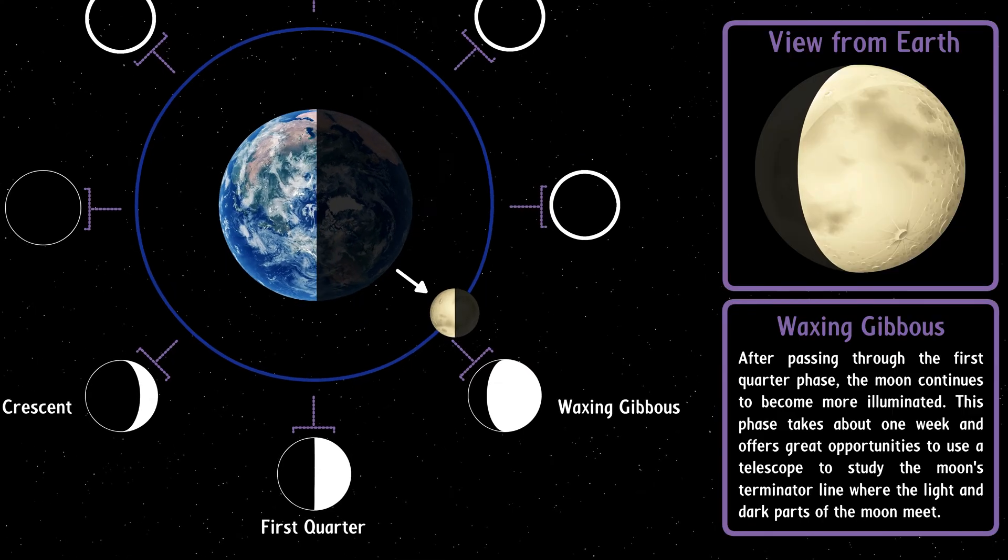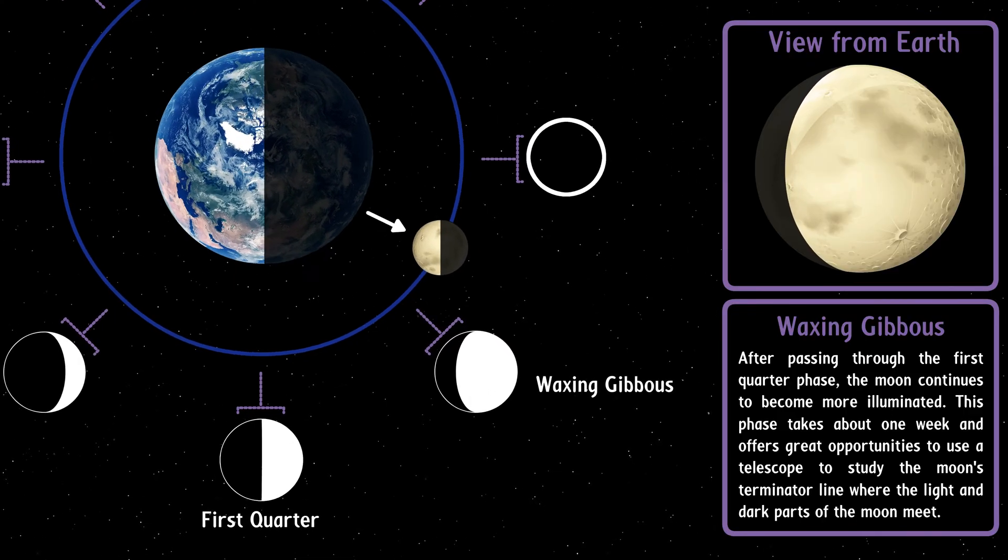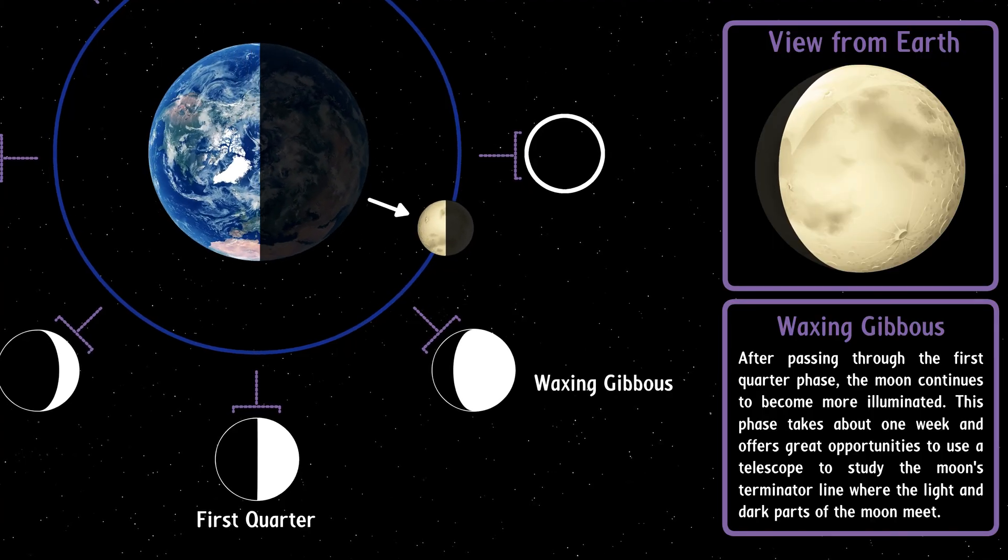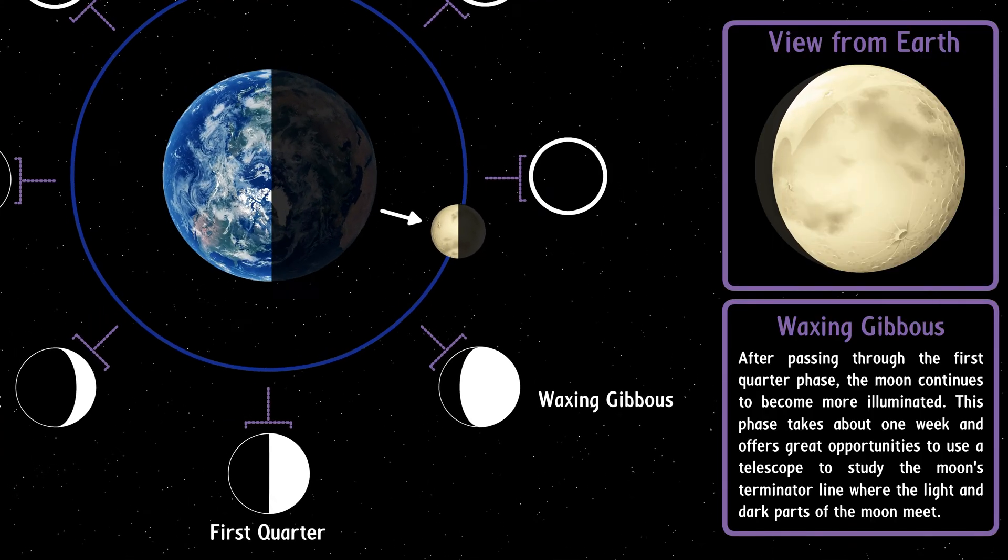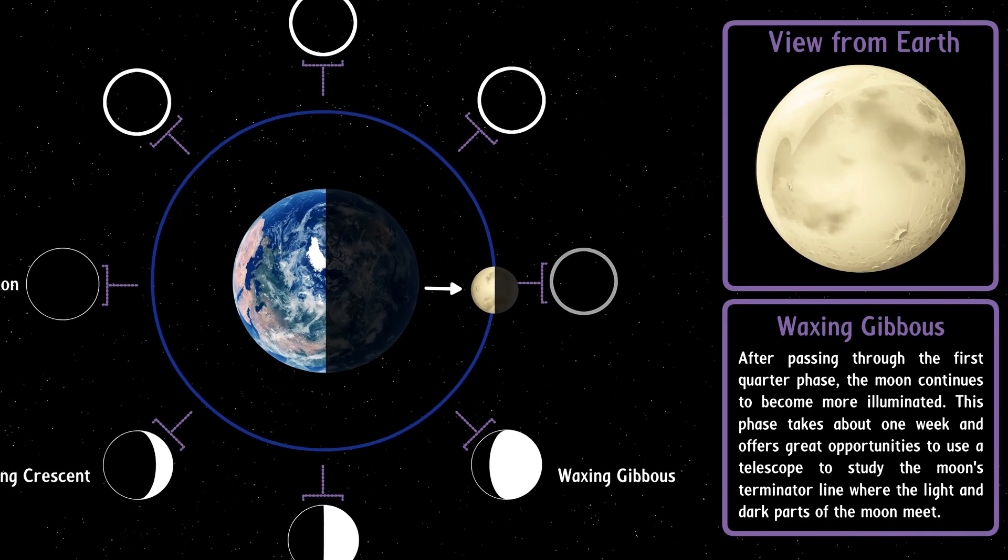Waxing gibbous. After passing through the first quarter phase, the moon continues to become more illuminated. This phase takes about one week and offers great opportunities to use a telescope to study the moon's terminator line where the light and dark parts of the moon meet.